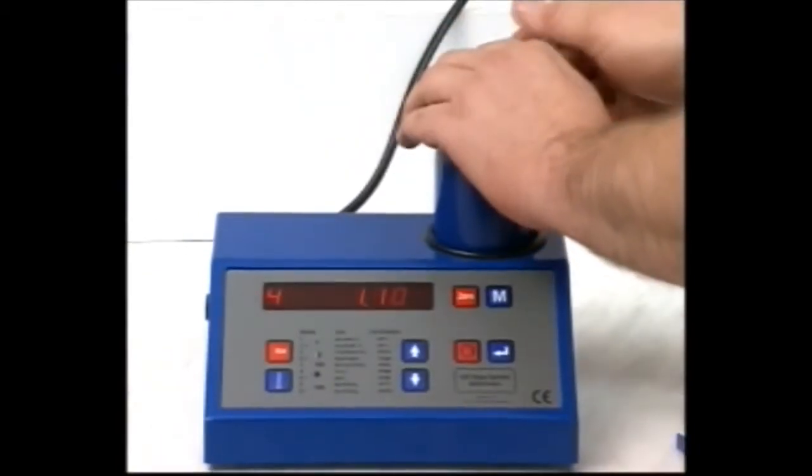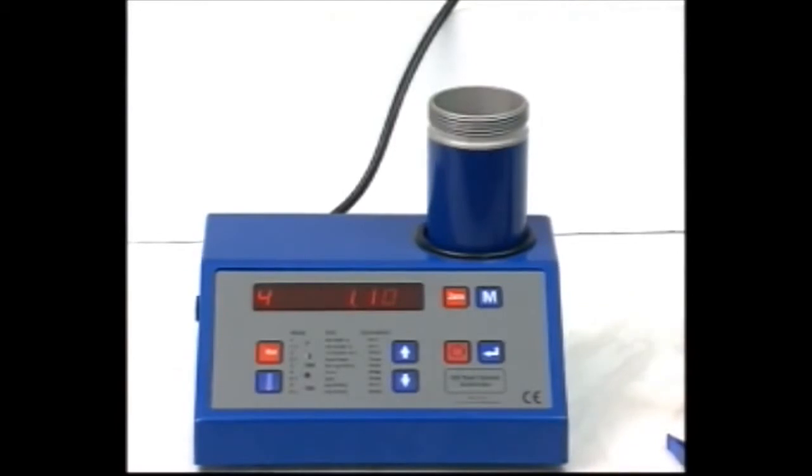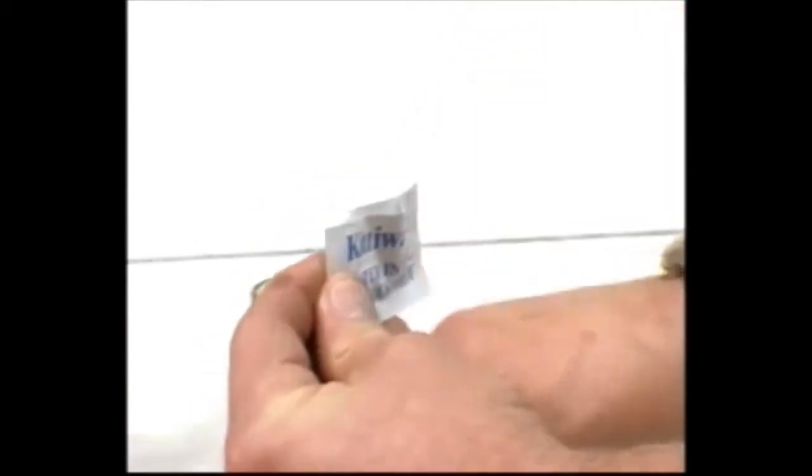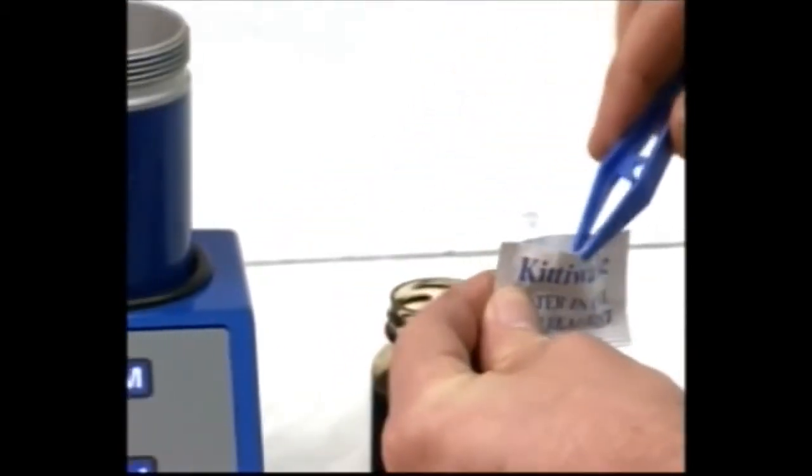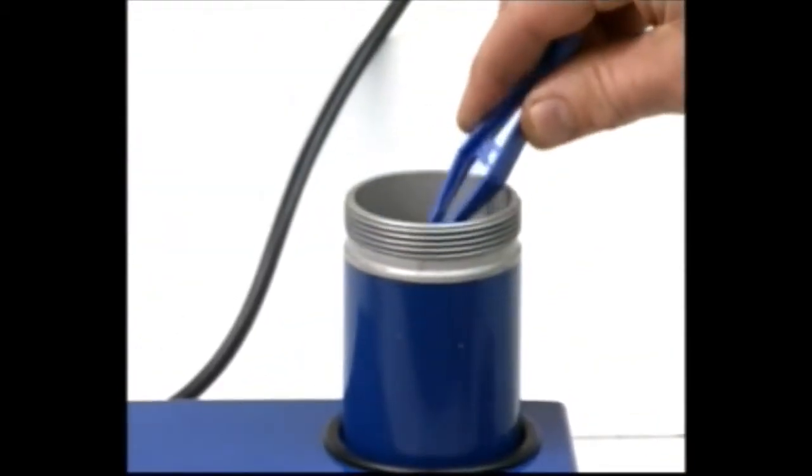Take a sachet of reagent B. Be very careful with this. Don't inhale it and mind your eyes. Cut the sachet along the dotted line, pinch it like this and place it upright in the cell, being careful not to spill it. Now replace the cap tightly.